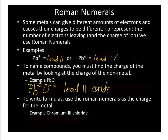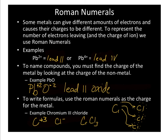Our next example is writing the formula for chromium(III) chloride. The III means chromium has a plus 3 charge, and chloride is a minus 1 charge. Chromium gives off three electrons, but chlorine can only take one electron at a time, so we need three chlorines to balance that out. The Lewis diagram shows chromium giving off those three electrons to three different chlorine atoms, giving us CrCl3.